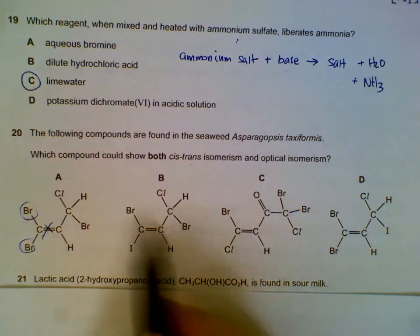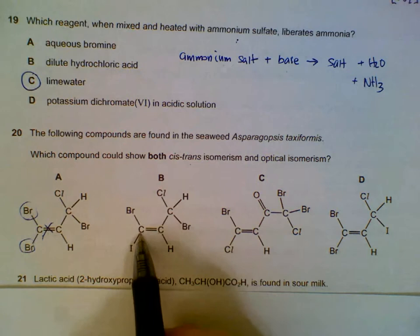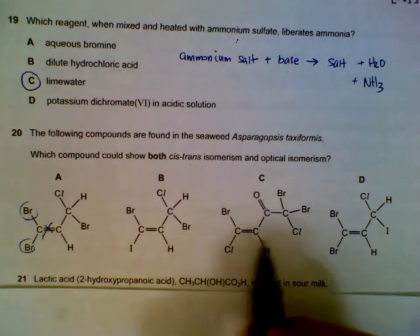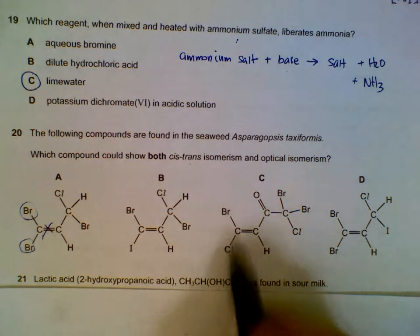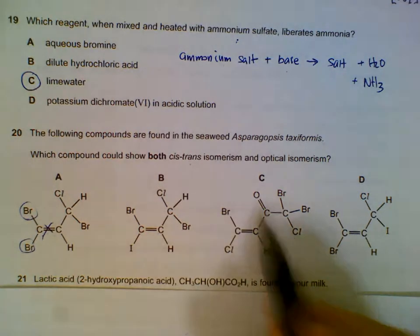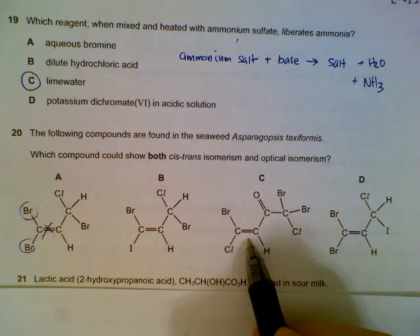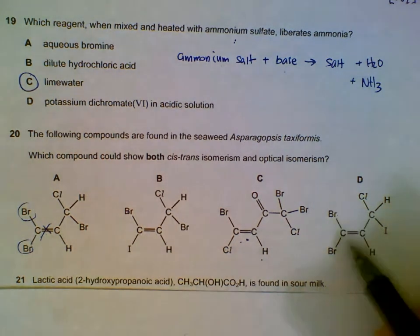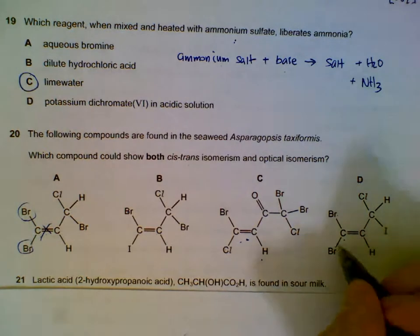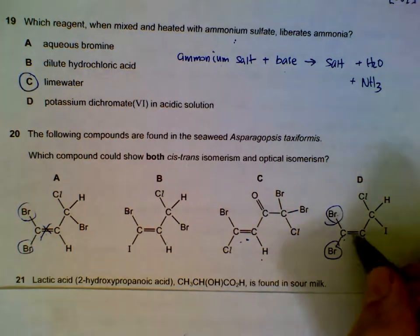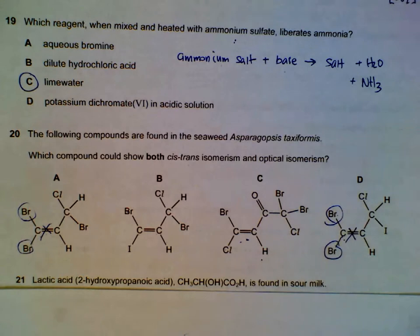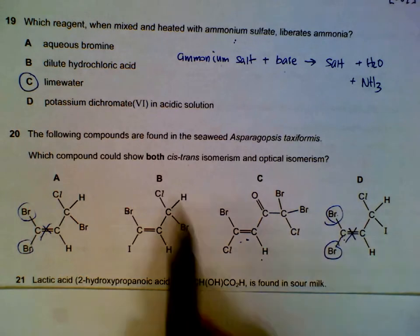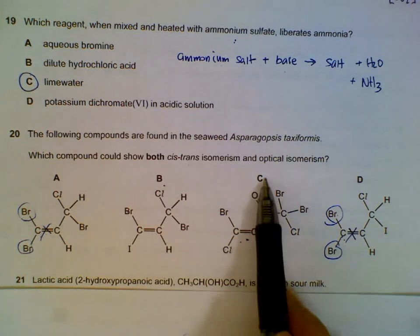This one, we don't have two groups that are the same attached to the same carbon, so this is still possible. We leave this aside. This one: Br, Cl different, this whole group and H different, so possible for cis-trans. We leave it alone. This one: Br, Br, same groups attached to the carbon, so there won't be a cis-trans here. Now we narrow down to B and C.